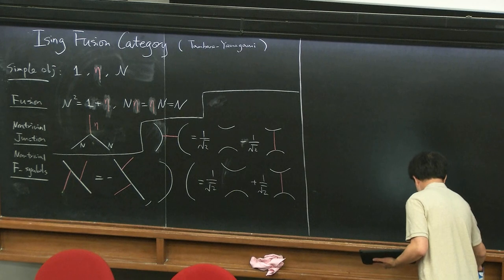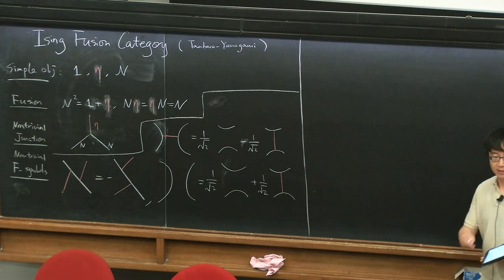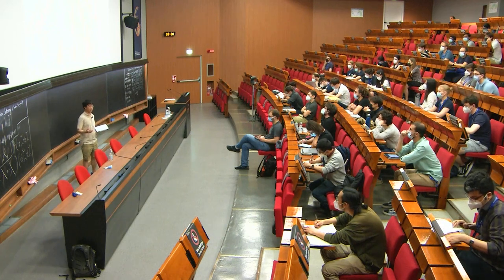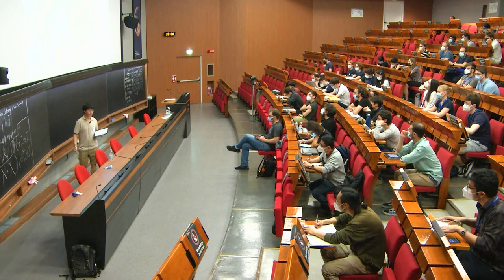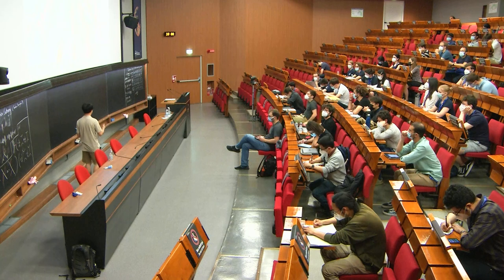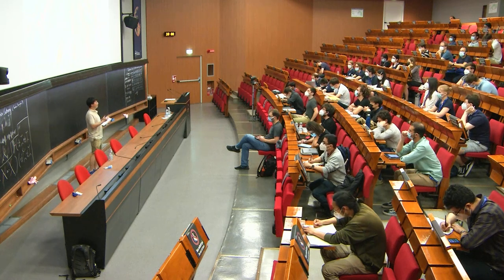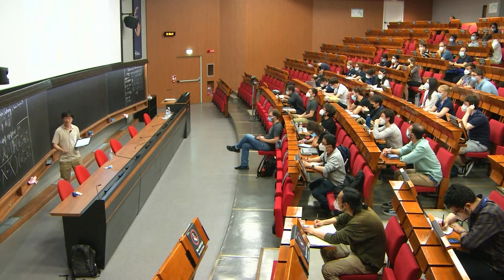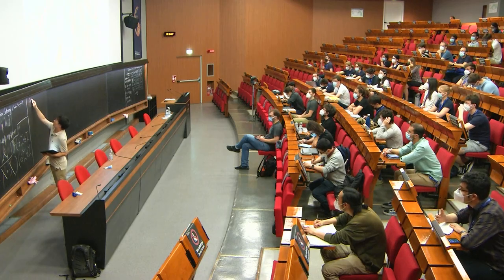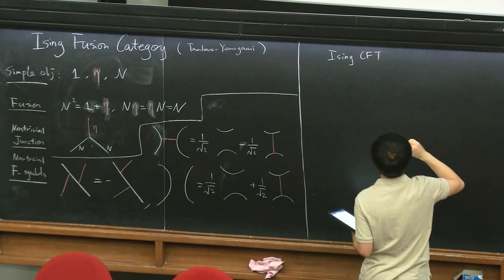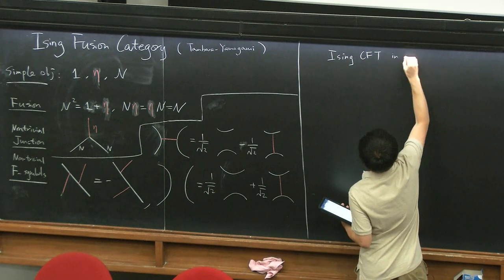In the previous lectures, we have been focusing on the big picture—the general structure of non-invertible symmetries—and we spelled out a lot of this general structure in detail in two-dimensional CFTs. In this lecture, we'll apply the knowledge we have gained to identifying non-invertible symmetry in the very simple CFT: the Ising CFT in two dimensions.